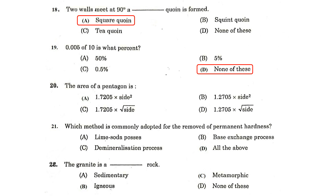The area of a pentagon is 1.7205 into the side squared. Which method is commonly adopted for the removal of permanent hardness? All of the above methods — i.e., lime soda process, base exchange process, demineralization process, etc. The granite is an igneous rock.